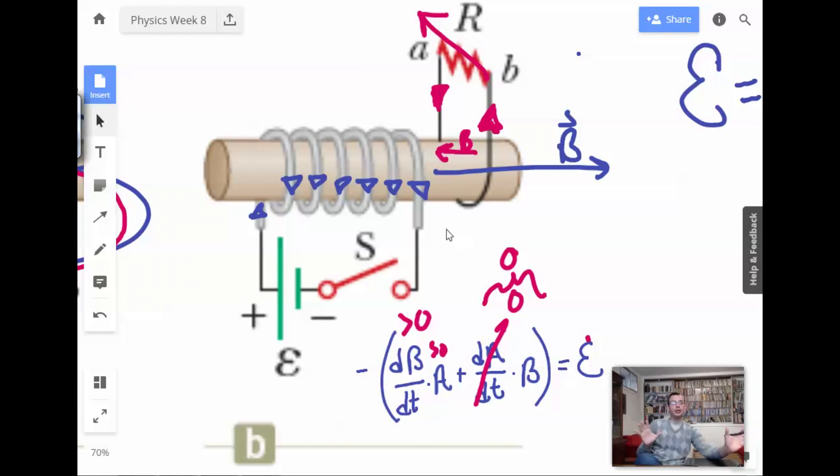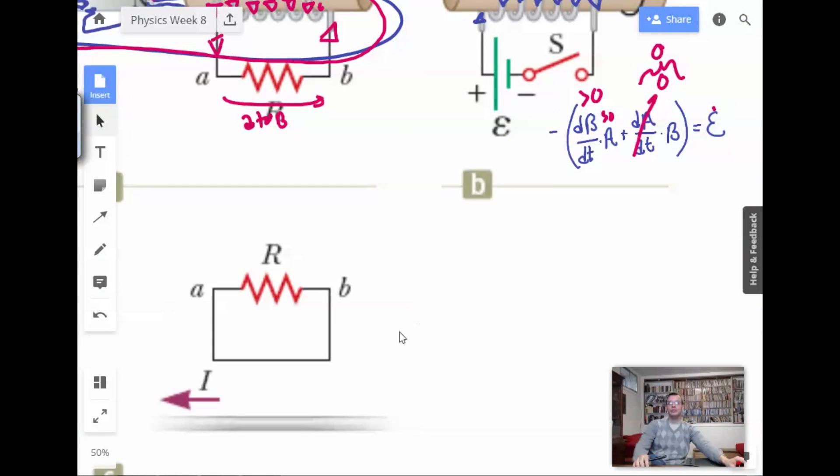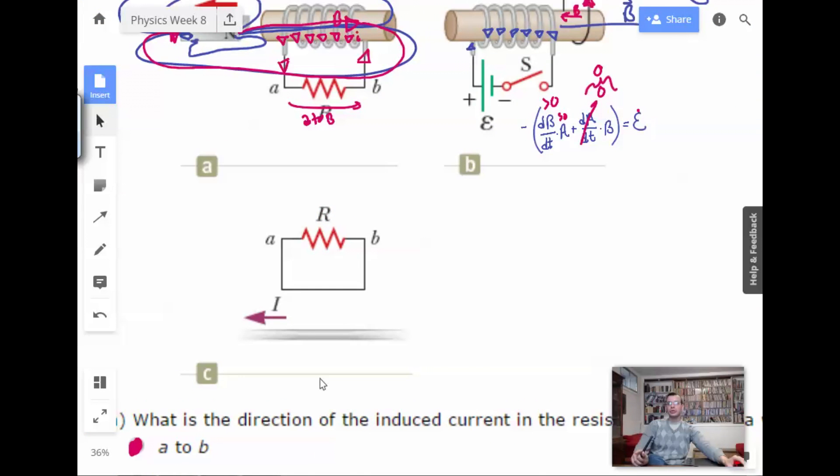All right. So now when you're taught with the whole opposing a change in magnetic field. A loop of wire opposes a change in magnetic field. So we think about, all right, magnetic field is created in this direction. So it wants to create, so the loop wants to create a magnetic field in that direction. So yeah, B to A. Okay. Same idea. So the math and the intuitive were the same. Okay. Good.